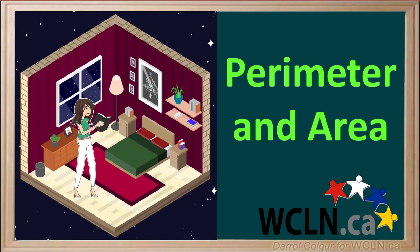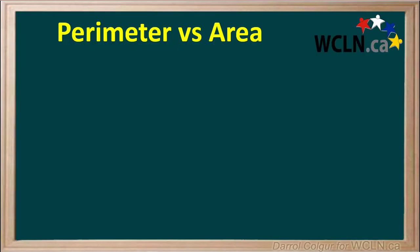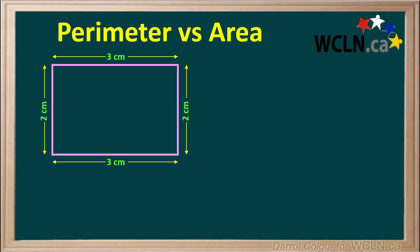A two-dimensional object has both a perimeter and an area. Let's see how these are different. Perimeter and area are both quantities that can be found for a rectangle or other object.